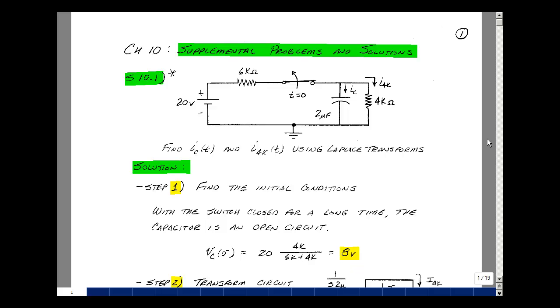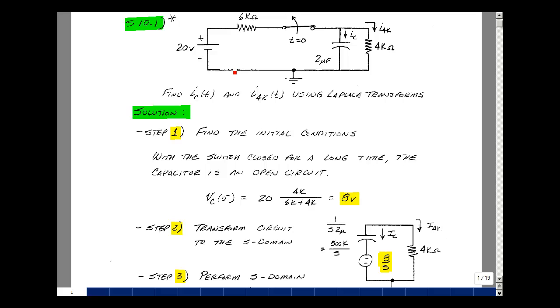Step two is to transform the circuit into the S domain. With the switch open, we're going to disconnect the battery and the resistor to the left, and we just got the capacitor and the resistor. In Chapter 10, on page 3, we had a model for the capacitor with the initial condition, and that was an impedance of 1 over SC. So that would be 1 over a micro, which is a million, divided by 2 is 500K, divided by S. And our initial condition is expressed as a step function, so 8 volts divided by S.